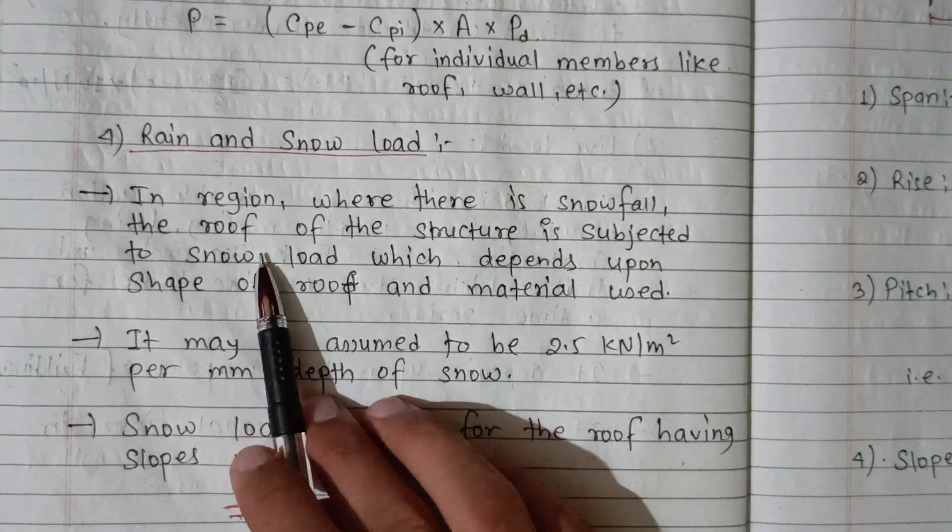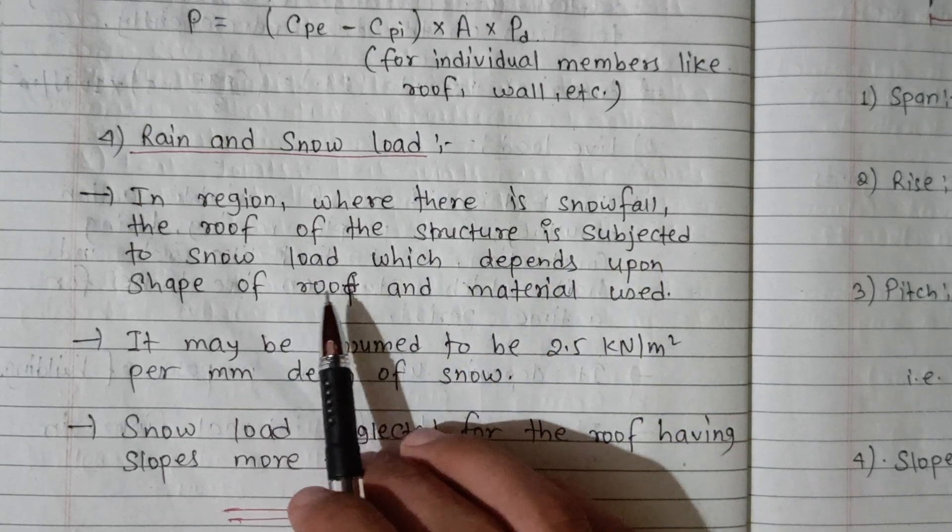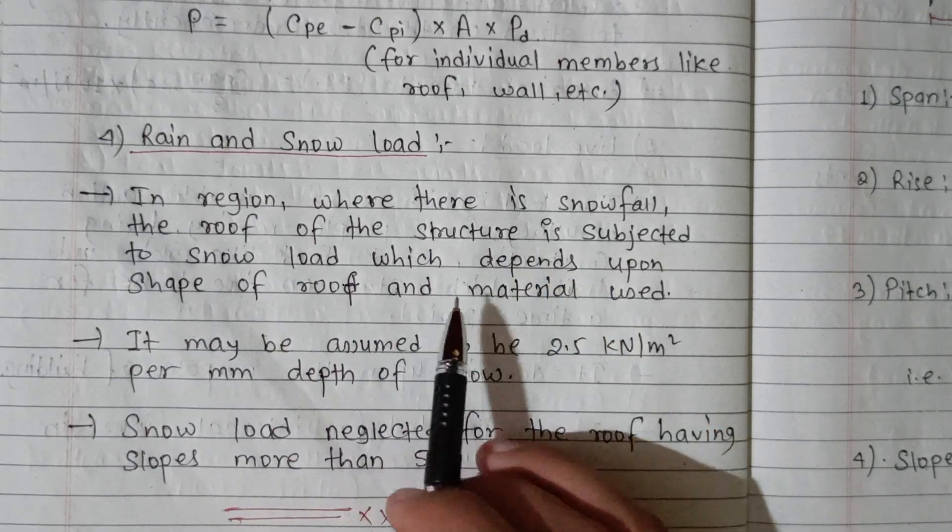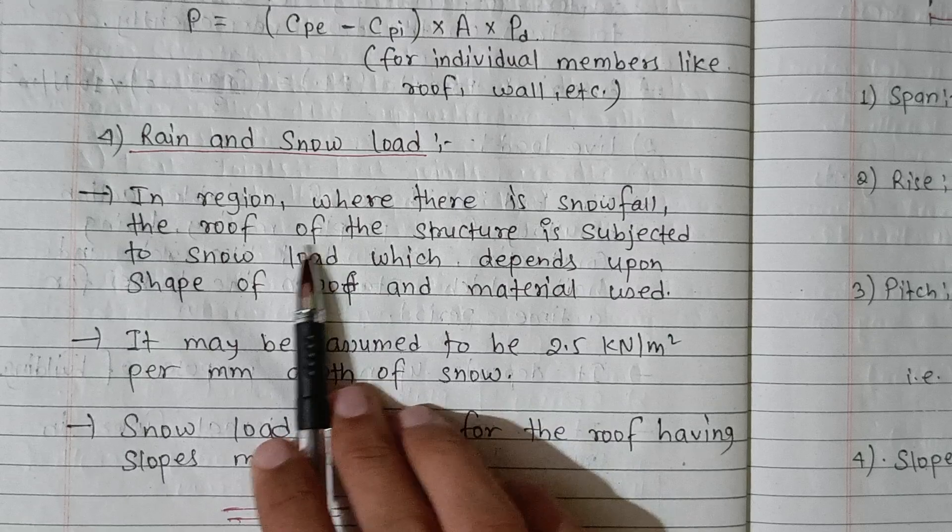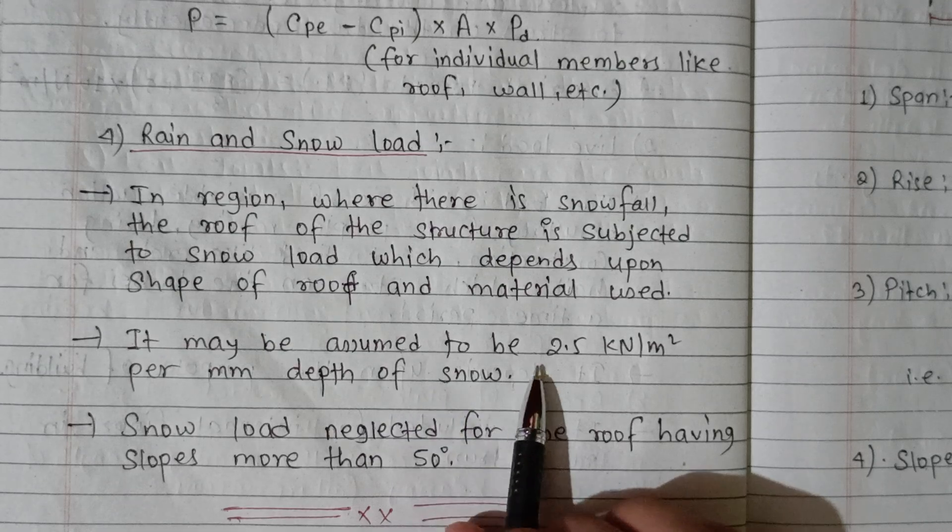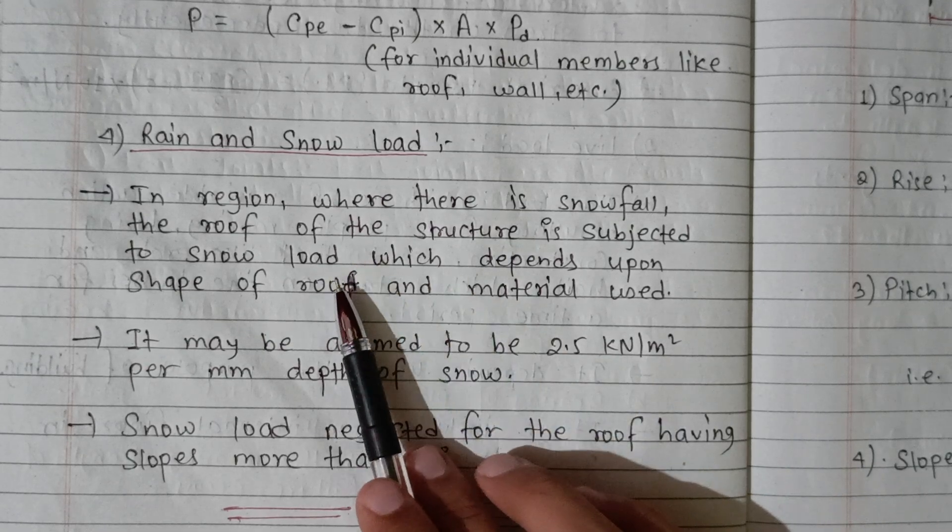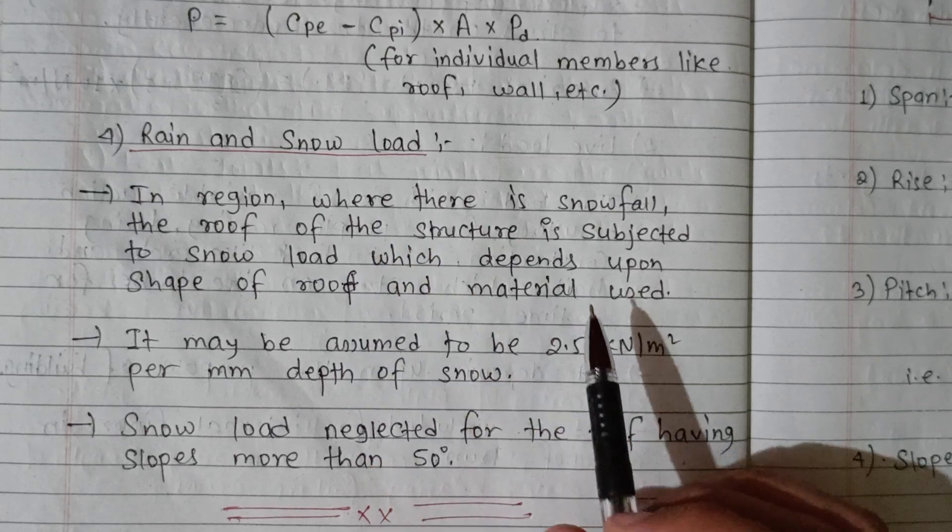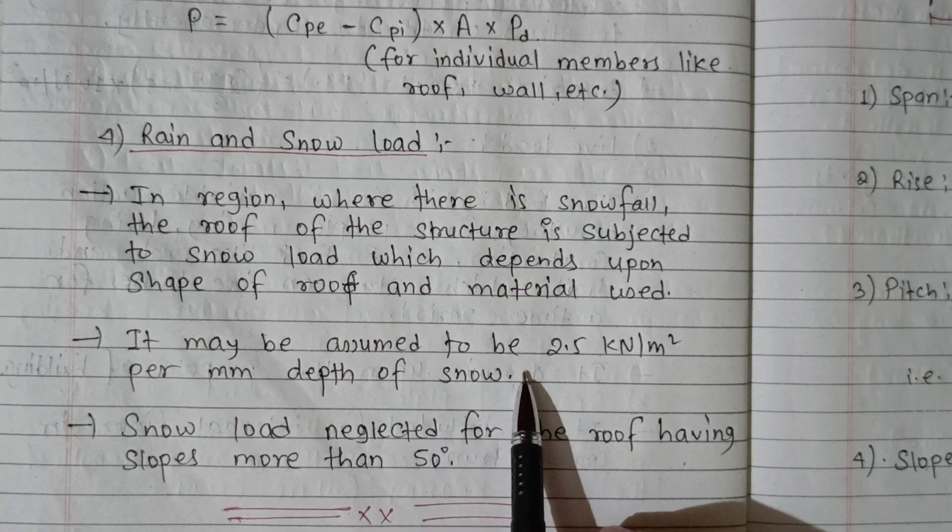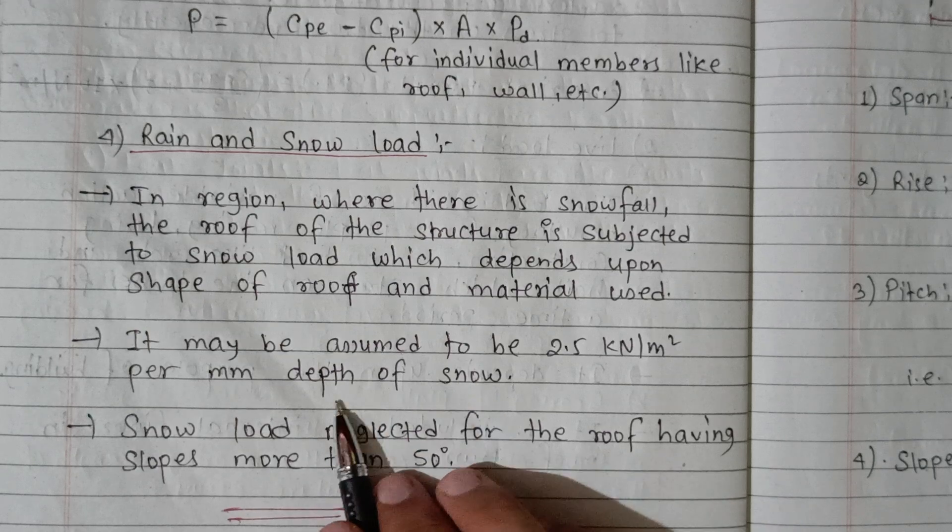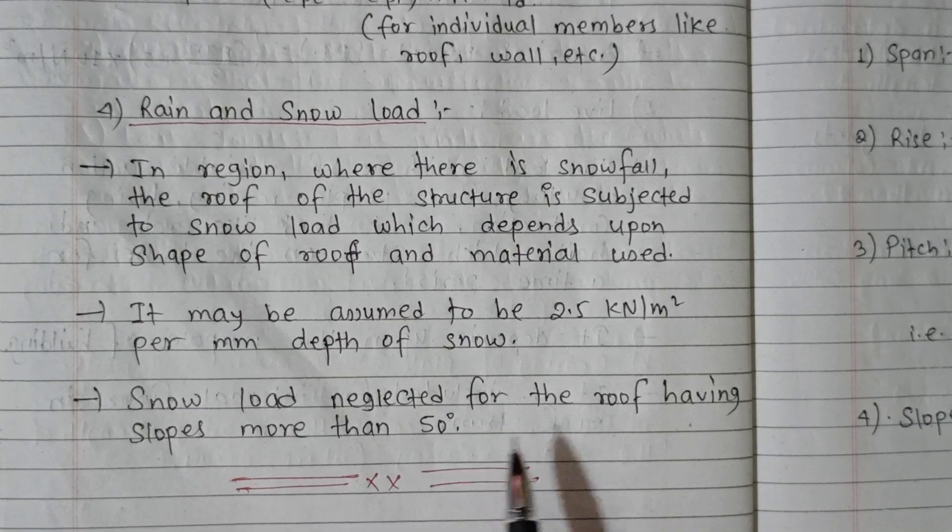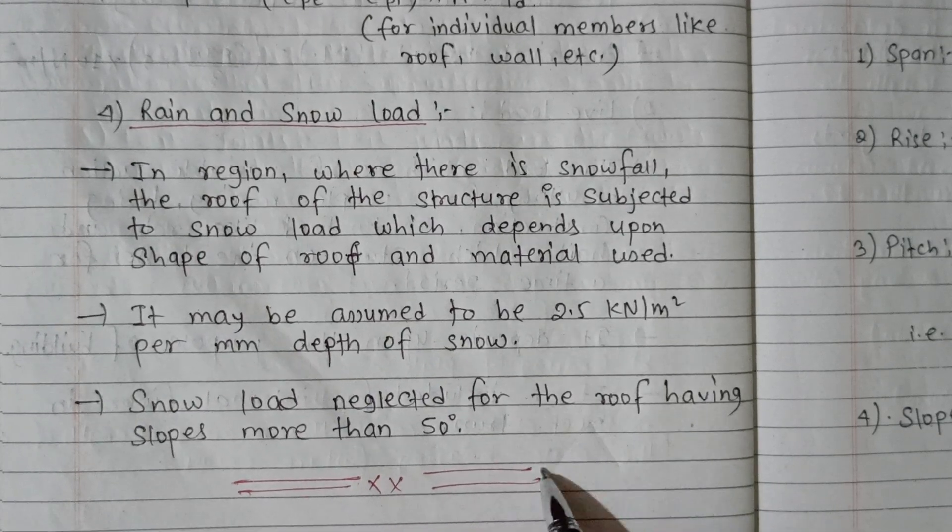Snow load: the structure is subjected to snow load which depends upon shape of roof and material used. It may be assumed to be 2.5 kN per meter. Snow load is neglected for the roof having slope more than 50 degrees.